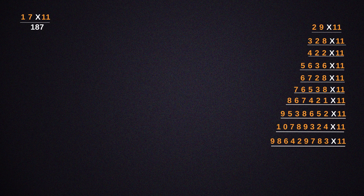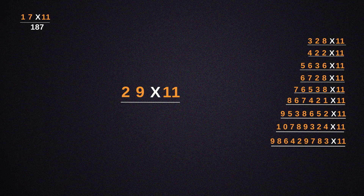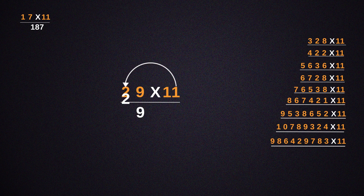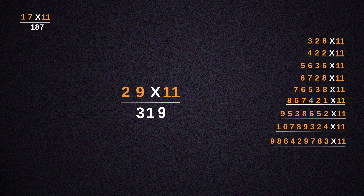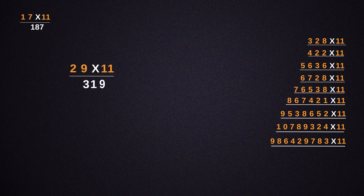Similarly, take the example of 29 into 11. Multiply 1 with 9, giving us 9. Then multiply 1 to 2, giving us 2. Now take the addition of 2 and 9, making it 11. So write 1 in the middle, and the other 1 gets added to 2. This gives us an answer of 319.